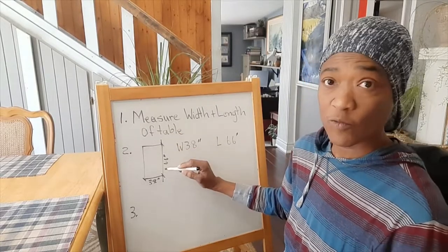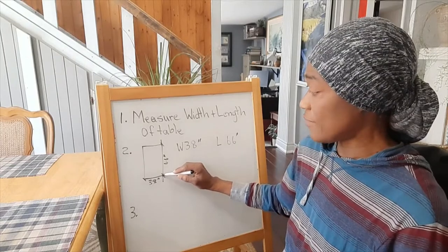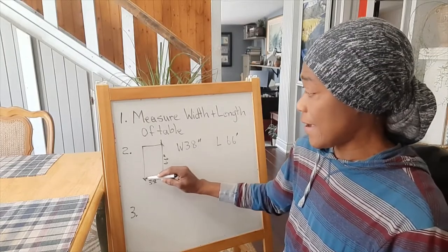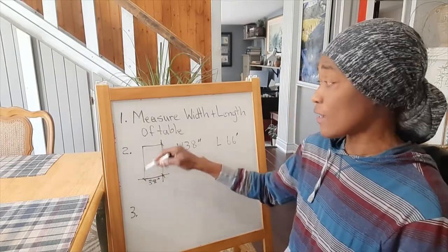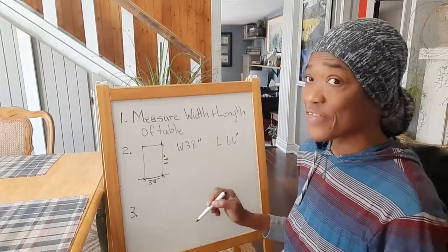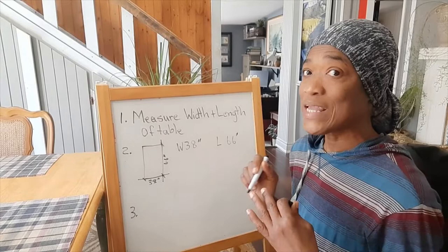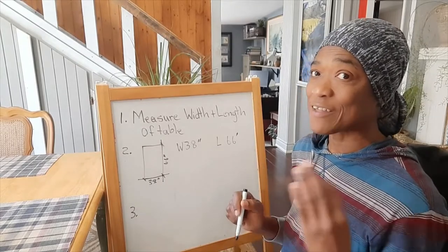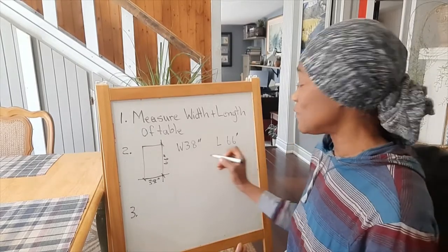So we account for all sides of the table. Therefore, what we need to do is 30 times 2, which equals 60.